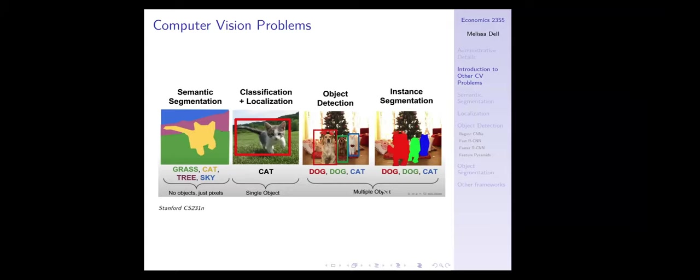From where we left off last week, we were talking about computer vision problems that we can apply the machinery we learned from classification to. This is the overview of the methods we were talking about. We talked last class about semantic segmentation, which is where at a pixel level, you classify what each pixel contains — grass, cat, tree, sky.